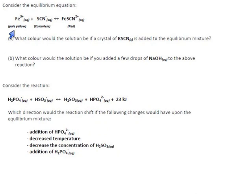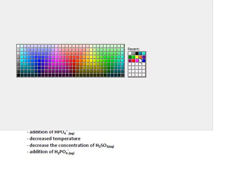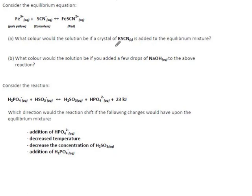A couple more of these. We have iron(III) ions and thiocyanate (SCN⁻). What color would the solution be if a crystal of KSCN was added to the equilibrium mixture? If you add KSCN and it's soluble, it dissolves in water and breaks up into potassium ions — which we don't care about — and SCN⁻ ions. So technically we're adding SCN⁻. The system will want to use that up, so this side goes down, and the iron compound — the product — will increase. The reaction goes to the right in response.